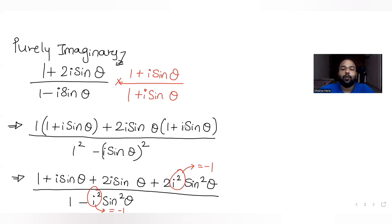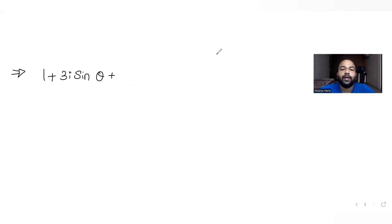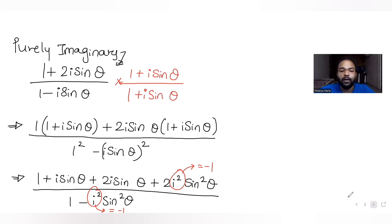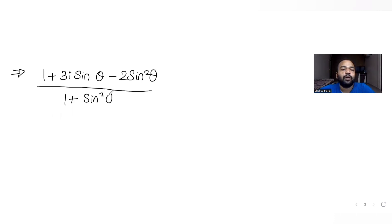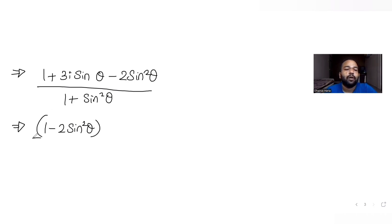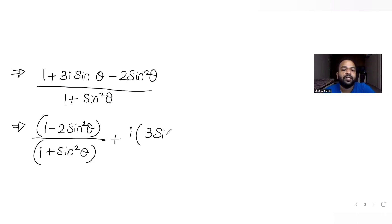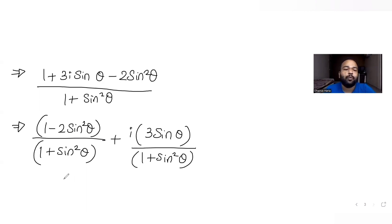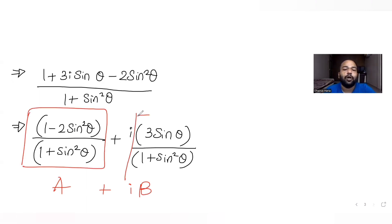Continuing the simplification: in the numerator we have −2sin²θ from the real terms, and i·sinθ + 2i·sinθ = 3i·sinθ from the imaginary terms. So the full expression simplifies to (1 − 2sin²θ)/(1 + sin²θ) + i·(3sinθ)/(1 + sin²θ), which is now in the standard form a + ib where a is the real part and b is the imaginary part.